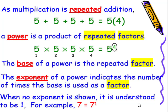When no exponent is shown, it is understood to be one. For example, seven is the same as seven to the first power.